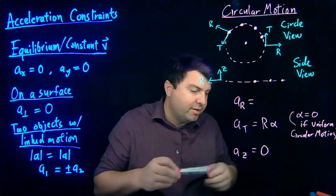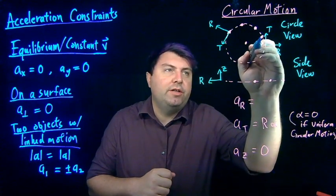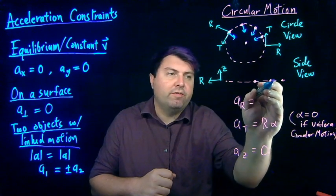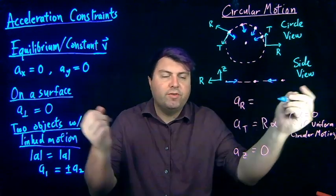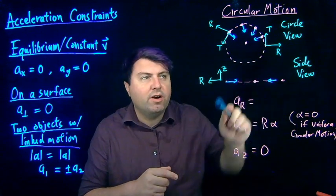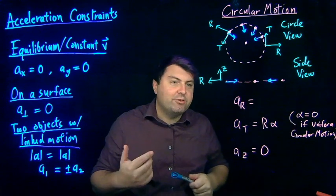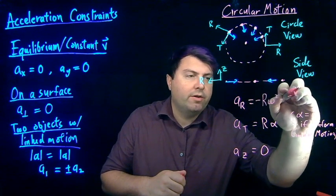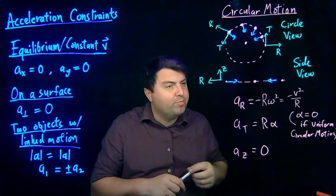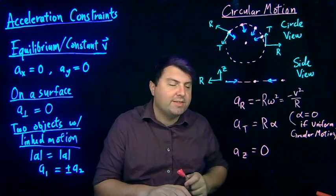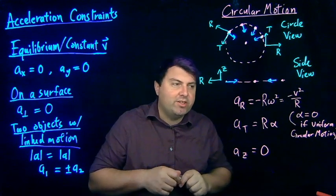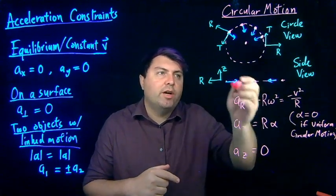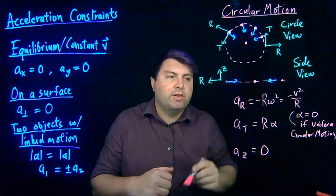Now for the important one: acceleration in the radial direction. As we move in a circle, we need an acceleration toward the center to keep us moving in that path — it points in the negative r direction, and it's our centripetal acceleration. Our centripetal acceleration is negative r omega squared, or negative v squared over r. Different books may handle the plus or minus sign differently, but what matters is that your net acceleration needs to point toward the center of the circle. Whether you define r as pointing away from or toward the center will determine the sign.